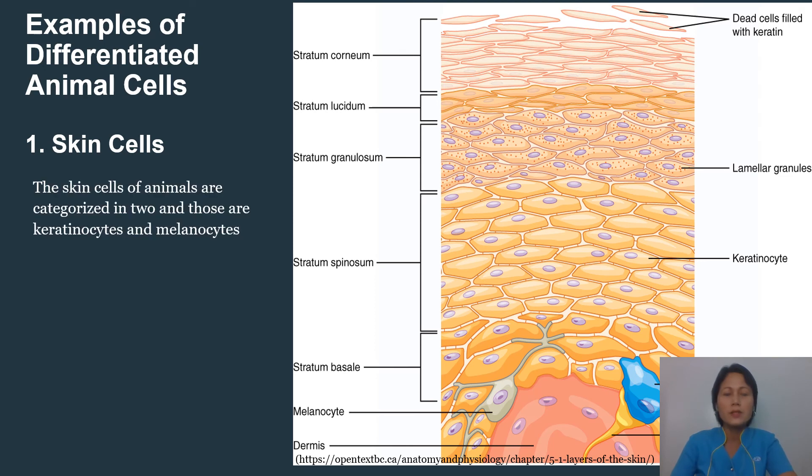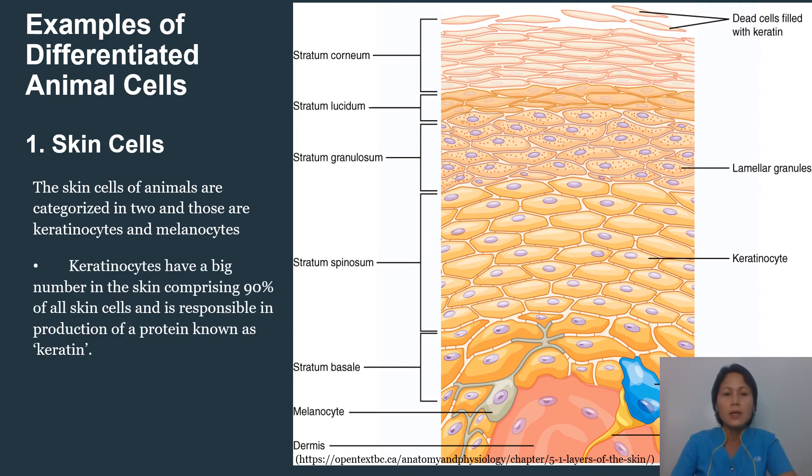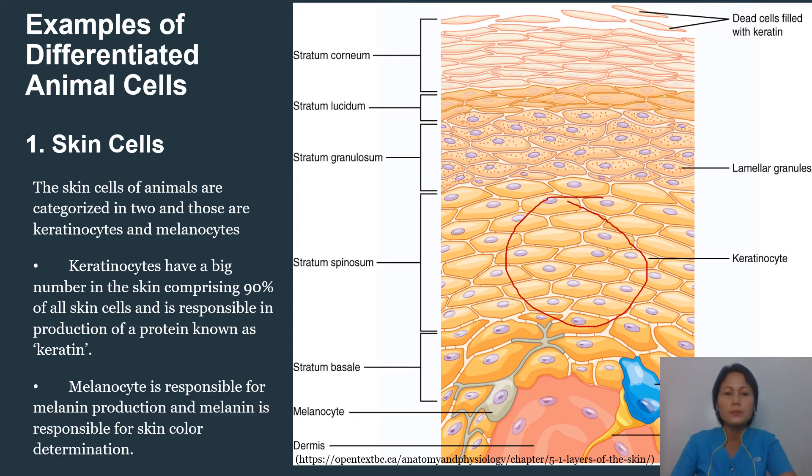Skin cells of animals are categorized in two, and those are keratinocytes and melanocytes. Keratinocytes have a big number in skin comprising 90% of all skin cells and is responsible in production of protein known as keratin. Melanocytes is responsible for melanin production and melanin is responsible for skin color determination. That is why some people do have black skin color. Some would have brown, light brown, and things like that.